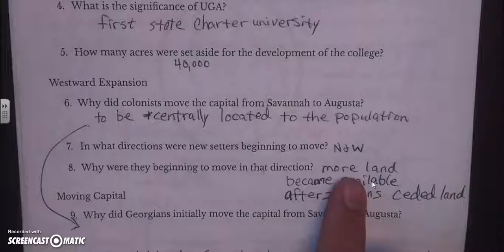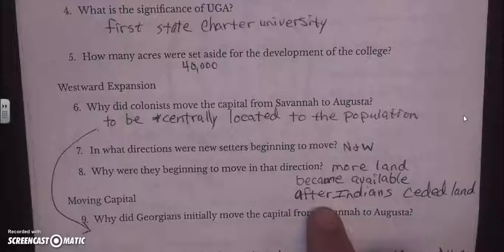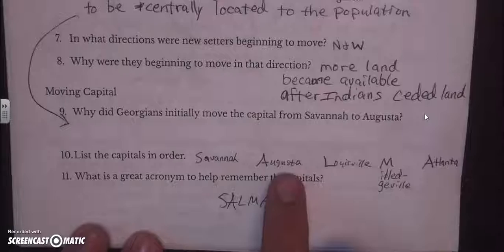Colonists moved the capital from Savannah to Augusta to be centrally located to the population as they moved northwest. More land became available after Indians ceded the land, which is why they moved west — again, to be centrally located. The capitals in order: Savannah, Augusta, Louisville, Milledgeville, Atlanta. The acronym was SALMA.